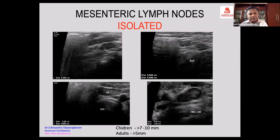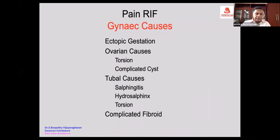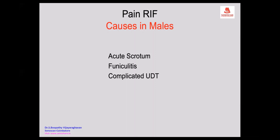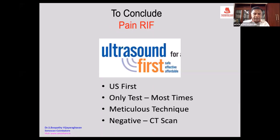The most commonly asked-about finding is mesenteric lymph nodes. When we started using the high-frequency scan, we began seeing various useful causes of pain in the right iliac fossa, with other causes also present in women and in males. This concludes the examination of the right iliac fossa to either rule in acute appendicitis or rule out a diagnosis most of the times. A word of caution: you have to follow a meticulous technique to pick up the conditions causing pain.